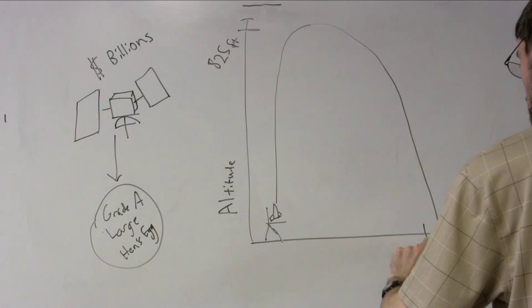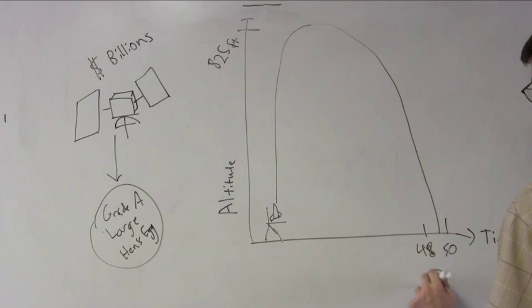We'll start with zero points. For each foot we miss the altitude target by, we'll take a point. For each second we miss the duration target by, we'll take four points. The fewer points, the better.